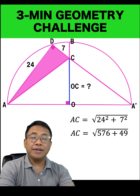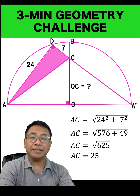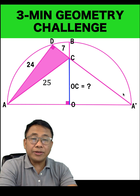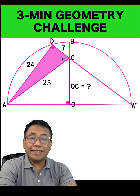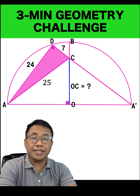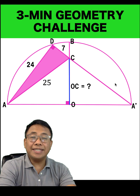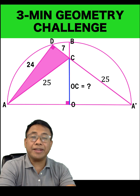Computing for AC, we found that AC is equal to the square root of the sum of the squares of 24 and 7, which equals positive 25. Next, since the right quarter circle is a reflection of the left quarter circle, segment AC and segment A'C must be congruent. And since AC is 25 units, then A'C must also be 25 units.